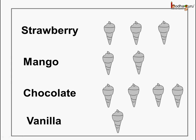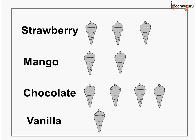Now it became very easy for the ice cream vendor to know how many ice creams were required. How many children wanted strawberry? One, two, three. And how many mango ice cream? One, two. How many chocolate ice creams? One, two, three, four. And how about vanilla? Only one child wanted vanilla ice cream. So this was an easy way to show how many ice creams were required for each flavor.